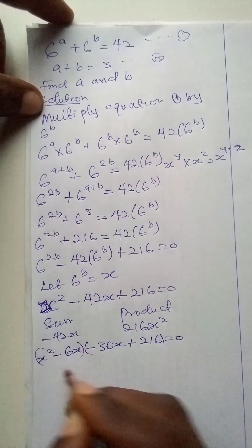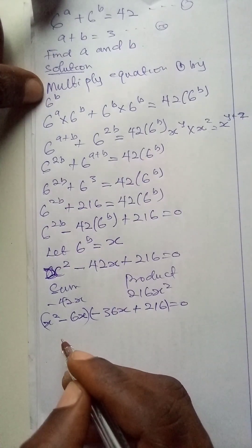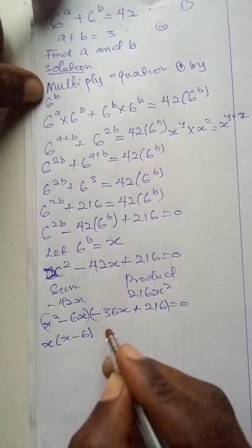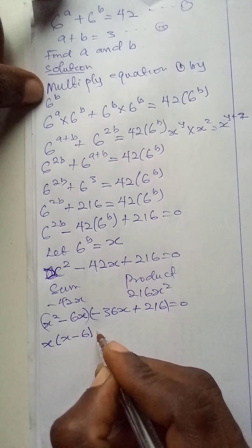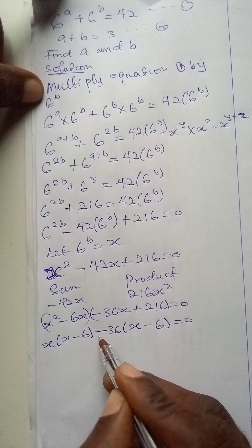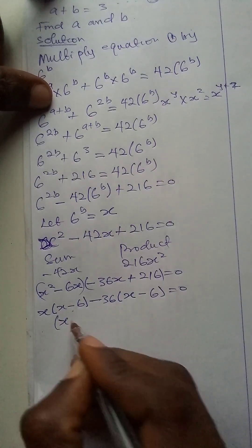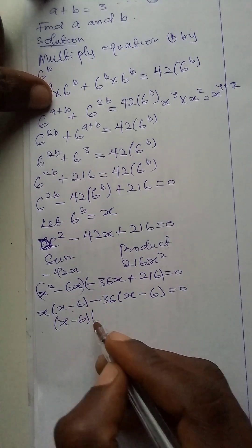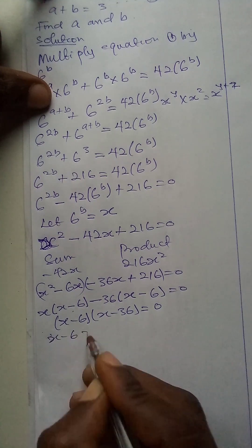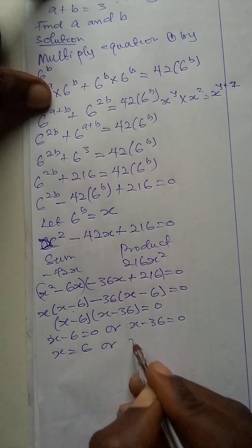So I will now group this quadratic expression. In the first bracket, x is the common factor. Bringing x out, it remains x minus 6. In the second bracket, minus 36 is the factor, so bringing it out, minus 36 times x minus 6, gives plus 216, because minus times minus is plus, and 36 times 6 is 216. These two brackets are the same, so taking one bracket out: x minus 6, times x minus 36, equals 0. Equating each factor to zero: x minus 6 equals 0, or x minus 36 equals 0. Therefore, x equals 6 or x equals 36.